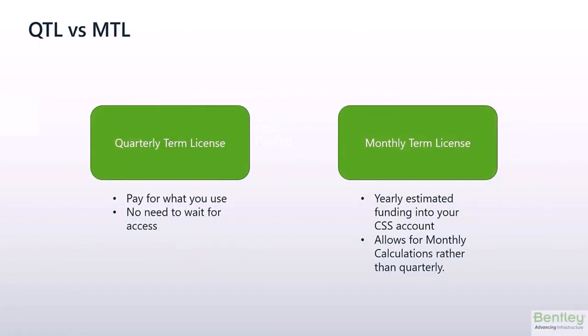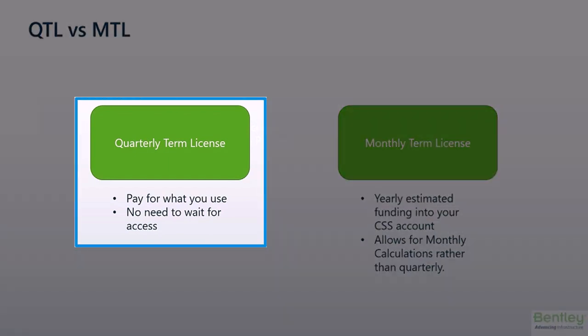These are the billing options available to you for usage incurred through open access licensing. Quarterly term licensing is the standard billing vehicle included with your Select contract and open access licensing. This is billed quarterly, usually on the 13th of the next quarter — so usage incurred in Q1 will be billed in early Q2. This is perfect for utilizing additional seats of licenses you already own based on project needs, or exploring a new solution without the perpetual cost that comes with purchasing a new seat.